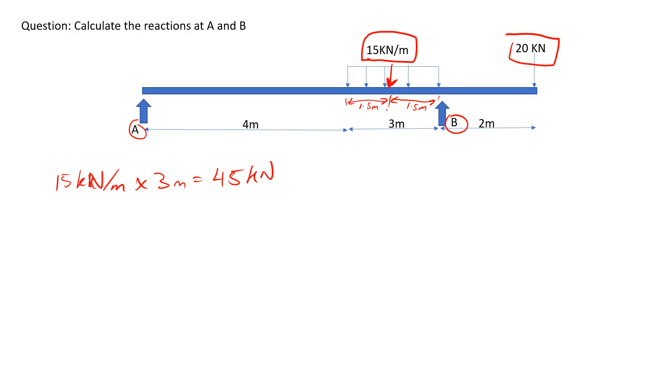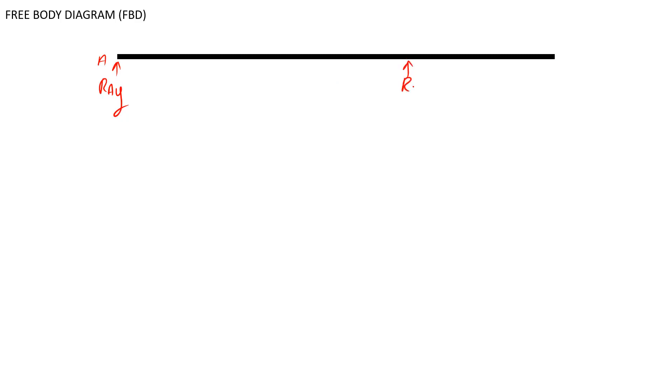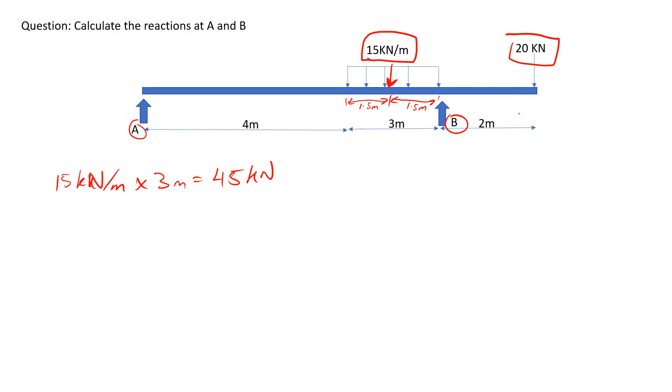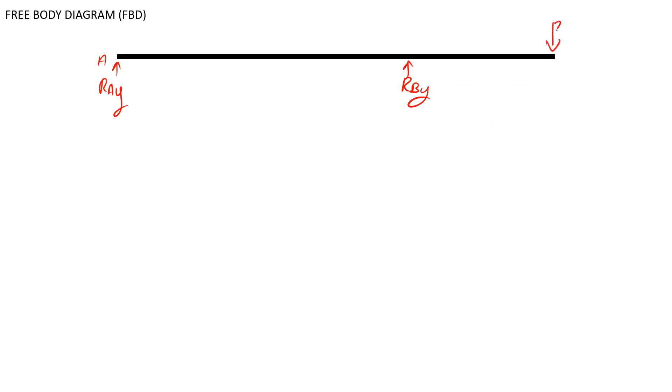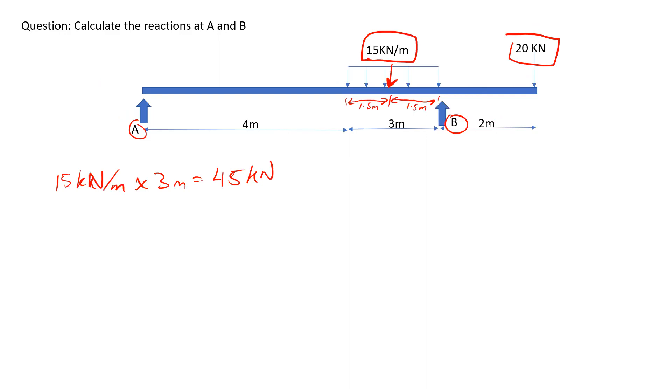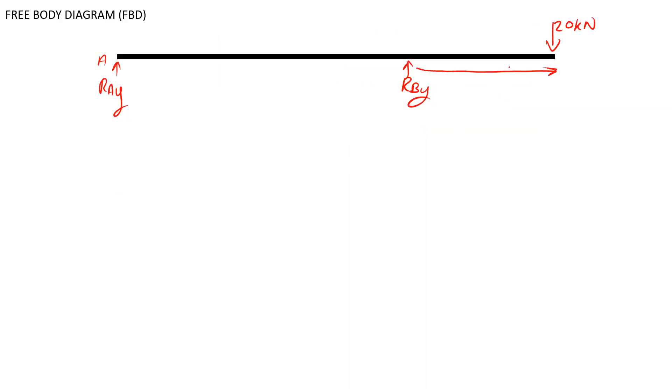We need this in order to construct our free body diagram. On the left side we have reaction A, acting upwards in the y direction. We also have reaction B acting upwards in the y direction. Reaction B is 2 meters away from the 20 kilonewtons force at the end of the beam.